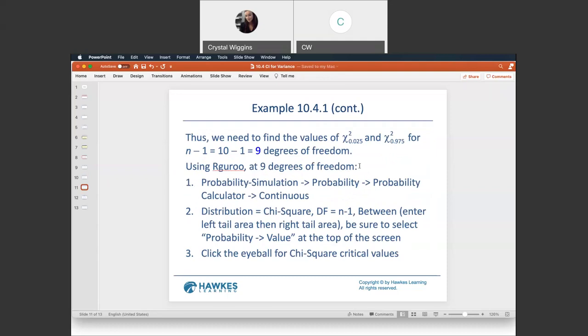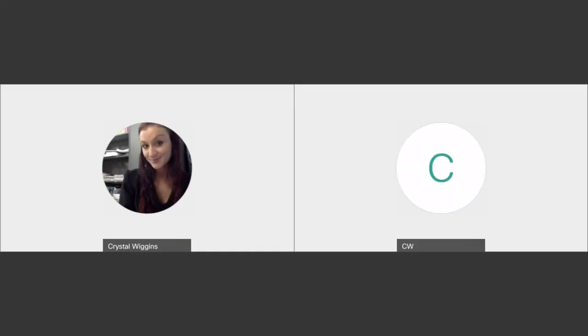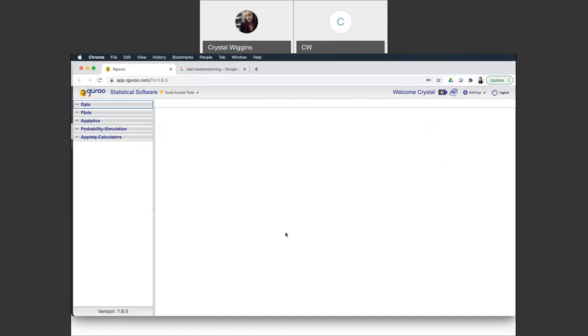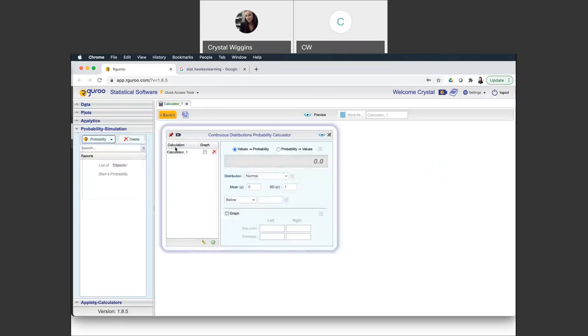In order to use our guru, we would need the degrees of freedom and the area left, 0.025. Let me switch over to the our guru screen. You're going to want to go to ourguru.com and log in. We are going to go to the probability simulation, then go to probability, probability calculator, and the continuous calculator. This is not obvious to find, so you definitely needed these steps.